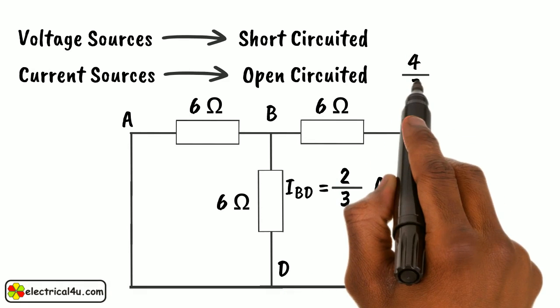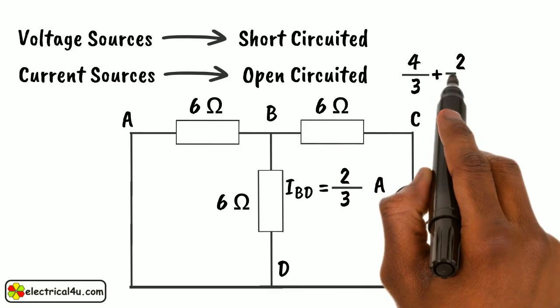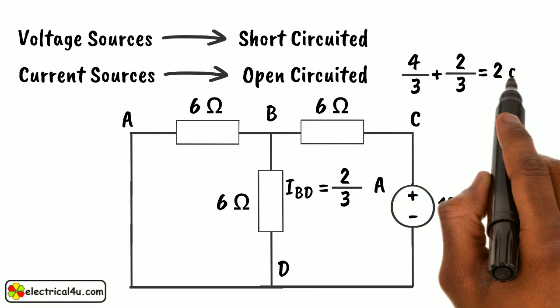The sum of these two currents would be 4 by 3 plus 2 by 3, that is 2 amperes.